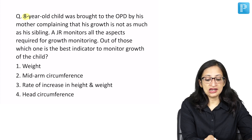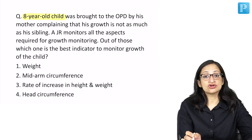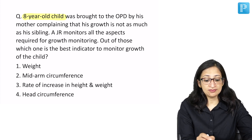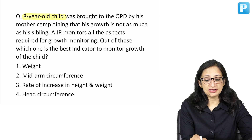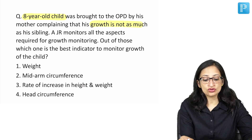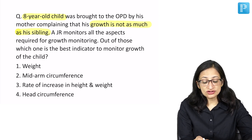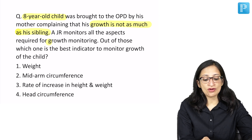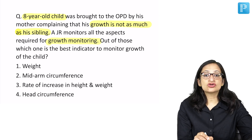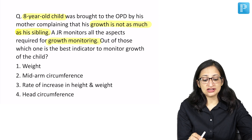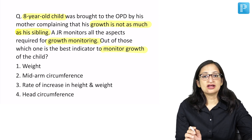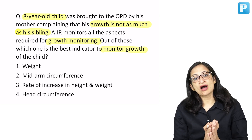In this question, an 8-year-old child was brought to OPD by his mother, complaining that his growth is not as much as his sibling. A junior resident monitors all the aspects required for growth monitoring. Out of these, which one is the best indicator to monitor the growth of the child?